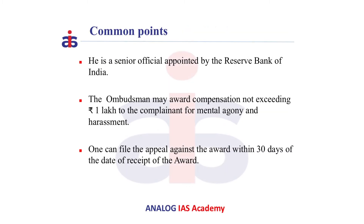Now let us discuss some common points across all three schemes. The senior official is appointed by the RBI in all these schemes. The Banking Ombudsman or any Ombudsman may award compensation not exceeding 1 lakh rupees to the complainant for mental agony and harassment. One can file an appeal against the award within 30 days of the date of receipt of the award.